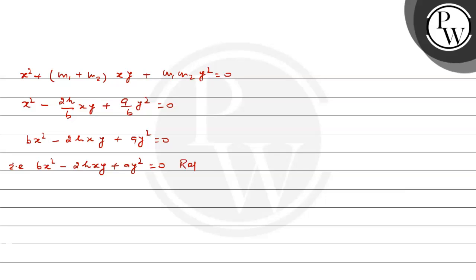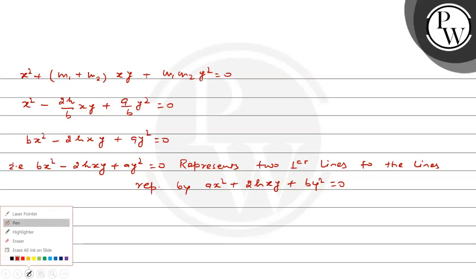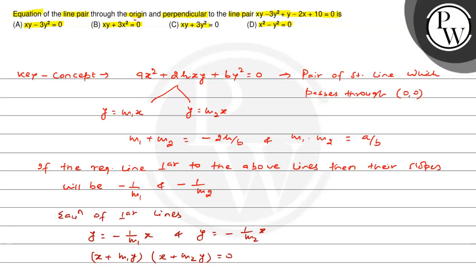So, b x square minus 2h xy plus a y square = 0 represents two lines perpendicular to the lines represented by a x square + 2hxy + by square = 0. तो इस concept को अगर काम में लें तो हम लोग किसी भी तरह के perpendicular line का equation निकाल सकते हैं। Given lines are: xy minus 3y square plus y minus 2x plus 10 = 0।